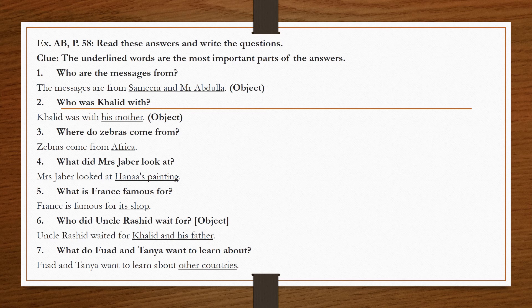Number three: 'Zebras come from Africa.' 'Africa' is underlined — it's a place, so we use 'where.' No auxiliary verb exists, and the verb 'come' is used because 'zebras' is plural. Result: 'Where do zebras come from?'